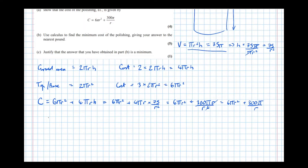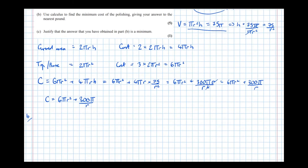To conclude part (a): C = 6πr² + 300π/r. That was quite a difficult question. Now for part (b): use calculus to find the minimum cost of polishing, giving the answer to the nearest pound.